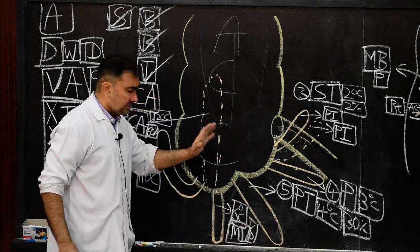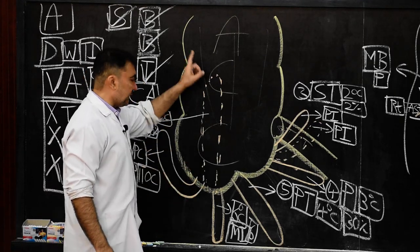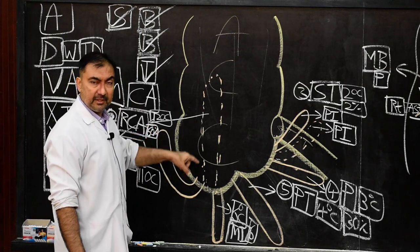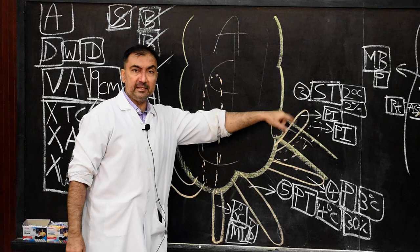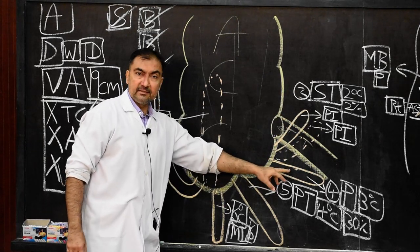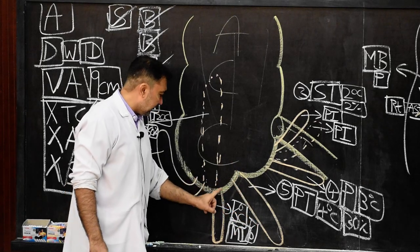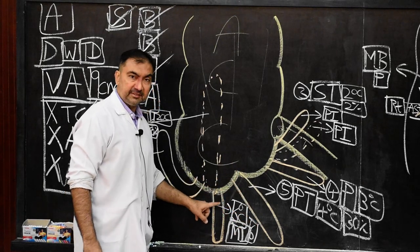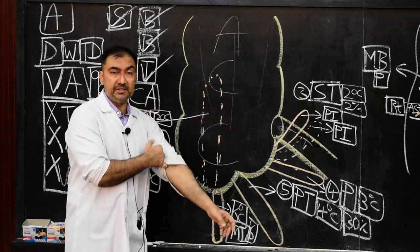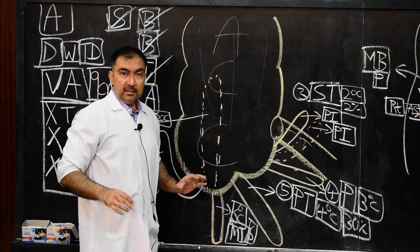Summary of classifications: (1) Subsecal and paracolic — eleven o'clock; (2) Retrocecal — twelve o'clock, most common; (3) Splenic (pre-ileal and post-ileal) — two o'clock; (4) Promontoric — three o'clock; (5) Pelvic — four o'clock, second most common; (6) Mid-inguinal — six o'clock. These are the classifications and positions to note for MCQs and one-mark question answers.